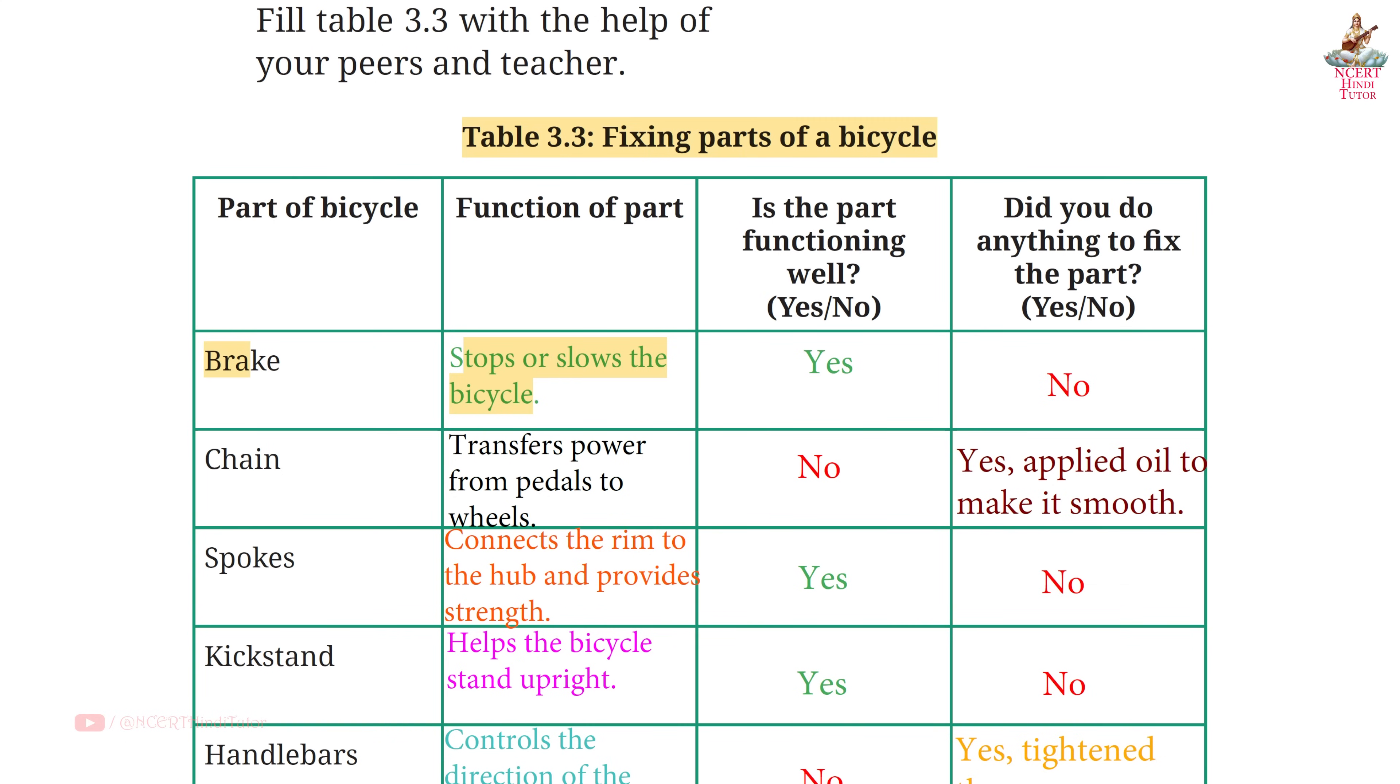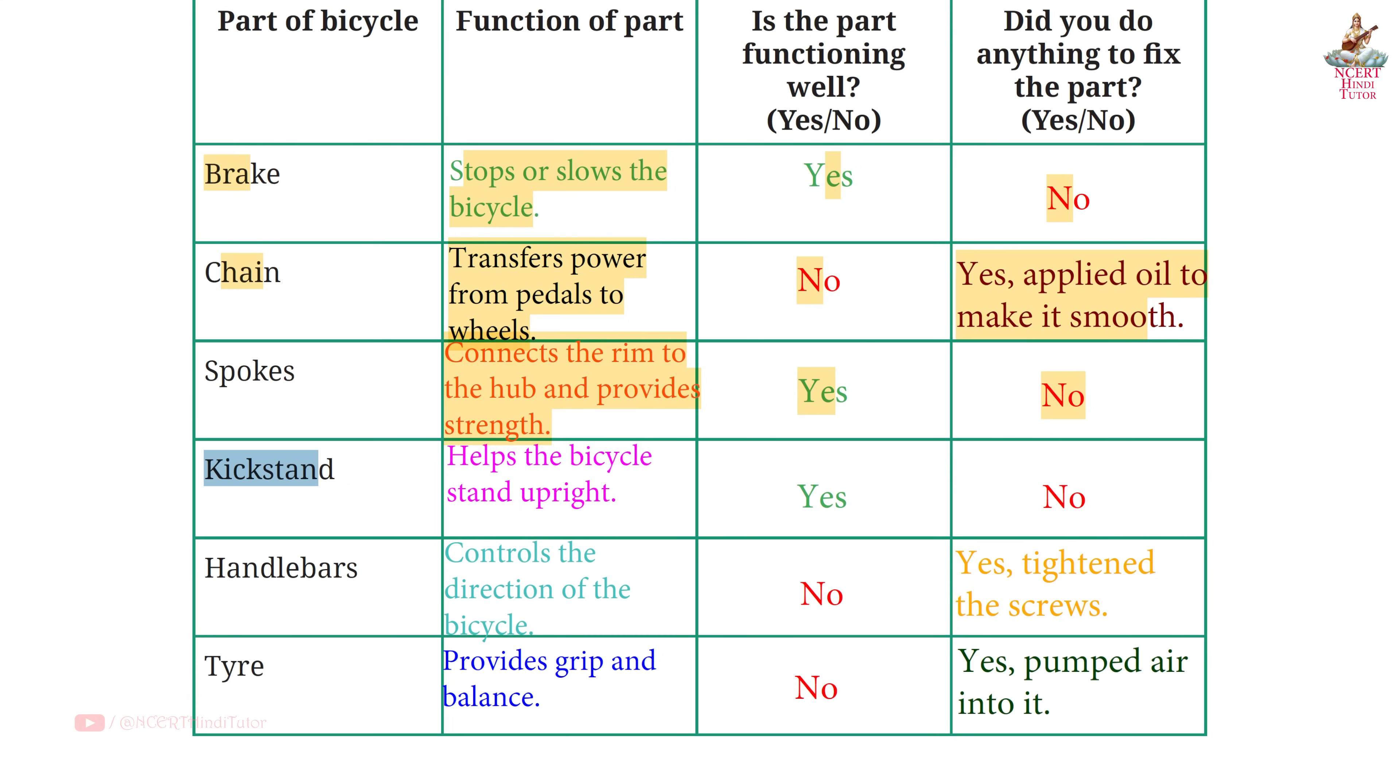Page 75, Table 3.3, Fixing parts of a bicycle. Part of bicycle: Brake. Function of part: Stops or slows the bicycle. Is the part functioning well? Yes. Did you do anything to fix the part? No. Second, Chain. Function of part: Transfers power from pedals to wheels. Is the part functioning well? No. Did you do anything to fix the part? Yes, applied oil to make it smooth. Third, Spokes. Function of part: Connects the rim to the hub and provides strength. Is the part functioning well? Yes. Did you do anything to fix the part? No. Next, Kickstand. Function of part: Helps the bicycle stand upright. Is the part functioning well? Yes. Did you do anything to fix the part? No.